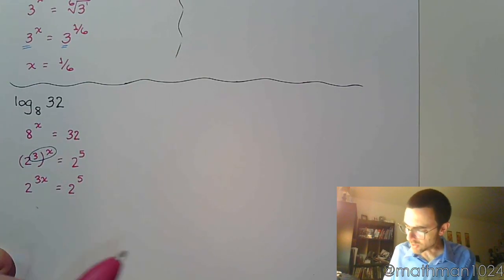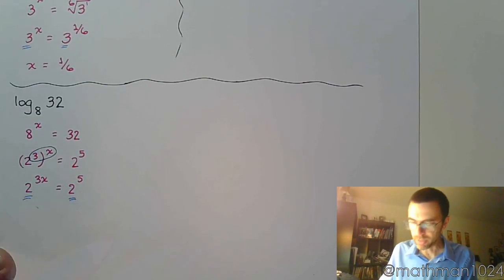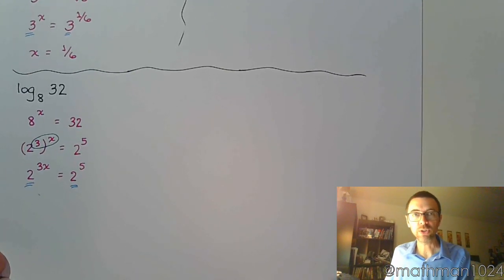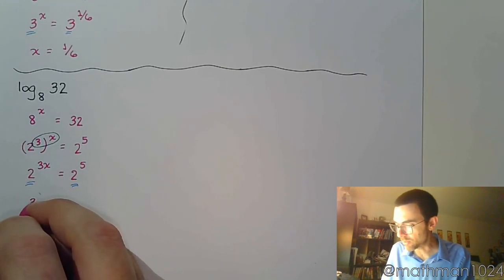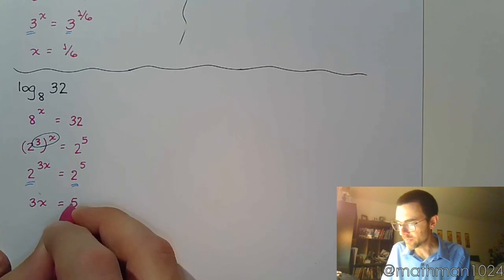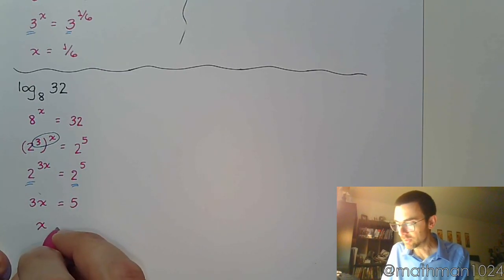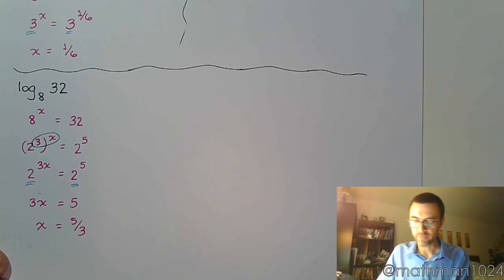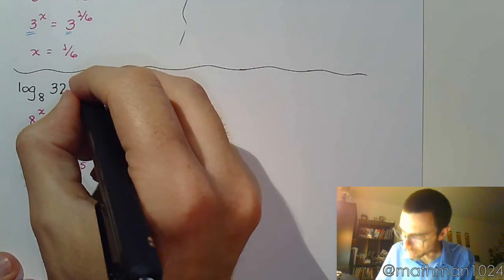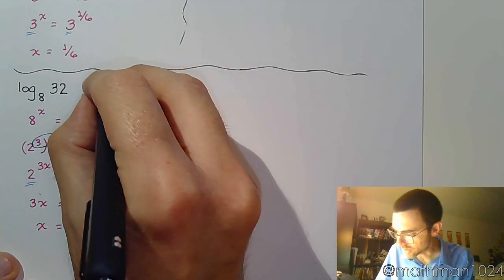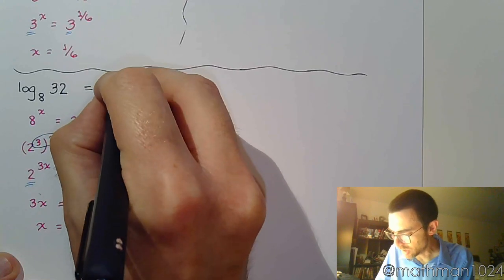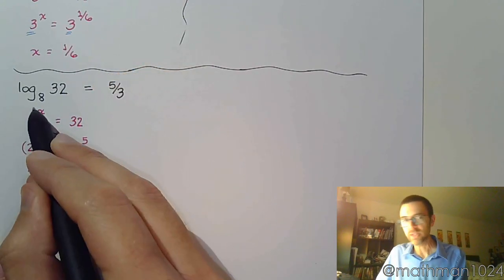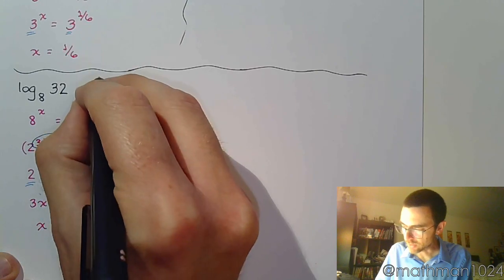So 2 to the 3x is equal to 2 to the fifth power. And since these guys now have the same base, I can set their powers equal to each other. So we have 3x is equal to 5. Finish getting x by itself. x is equal to 5 divided by 3. Now, I know I solved this like an equation, but you need to make sure that you remember to come back up here and answer the question. So the logarithm, log base 8 of 32 is 5 thirds.